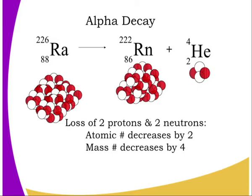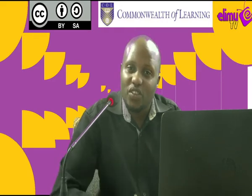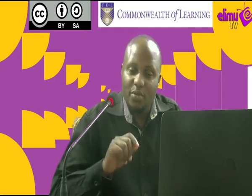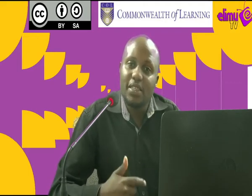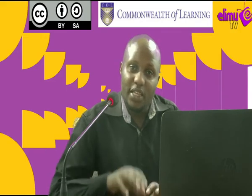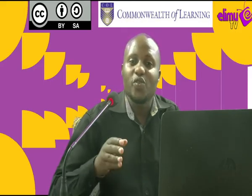Beta decay occurs when a beta particle is lost from the nucleus of an unstable atom. Carbon-14, for instance, undergoes beta decay to give a new nuclide which is nitrogen, atomic number seven. The atomic number increases by one and the mass number does not change. This is because the beta particle has mass number zero and atomic number negative one, so the new nuclide's atomic number increases by one, ensuring mass number and atomic number are conserved on both sides of the nuclear equation.